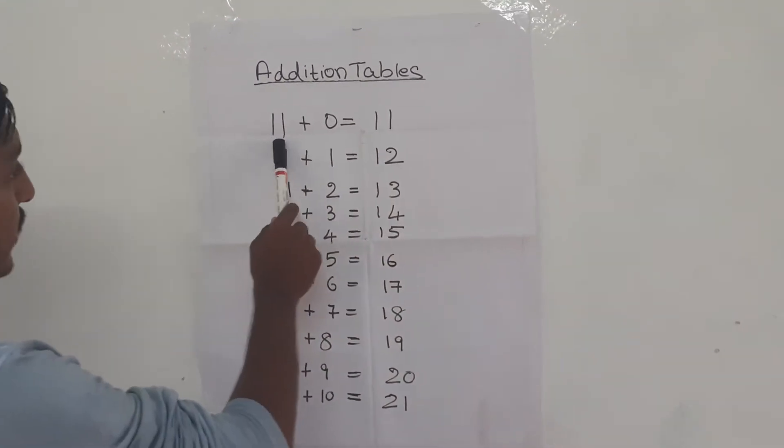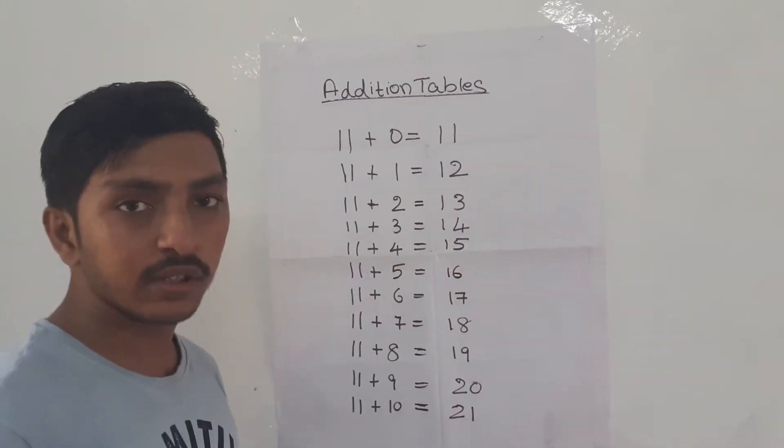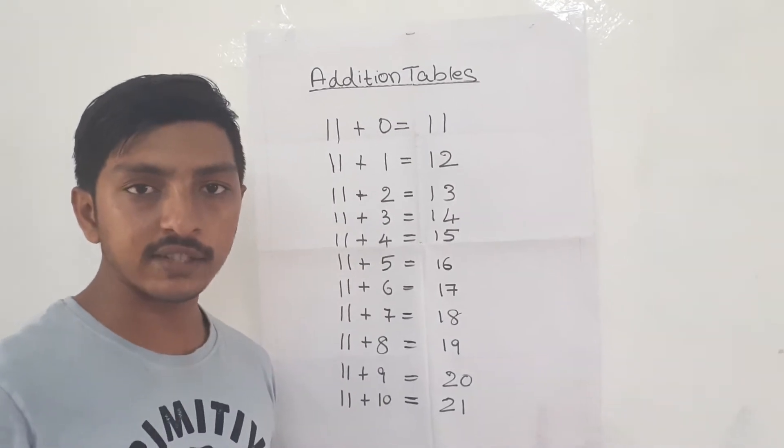So let's look at the addition table number 11. 11 plus 0 is equal to 11. When 0 is added to any number, the value does not change.